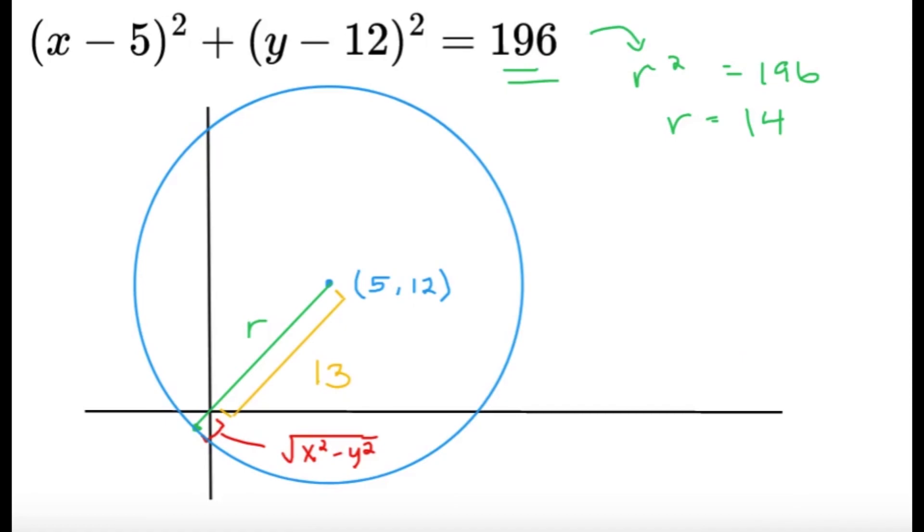This circle has a center at 5 comma 12. And since the right side here, this value of r squared is 196, so r equals 14. So the radius of this circle is 14. So this will be the rough sketch of the circle.